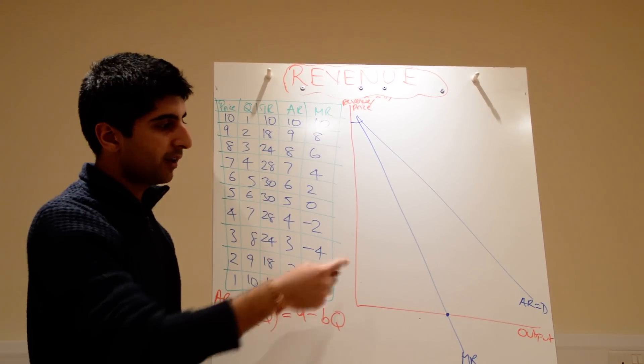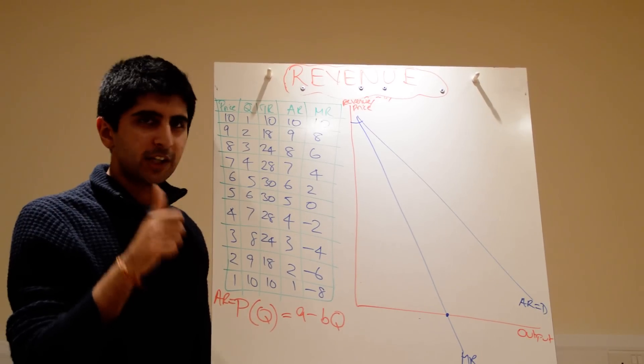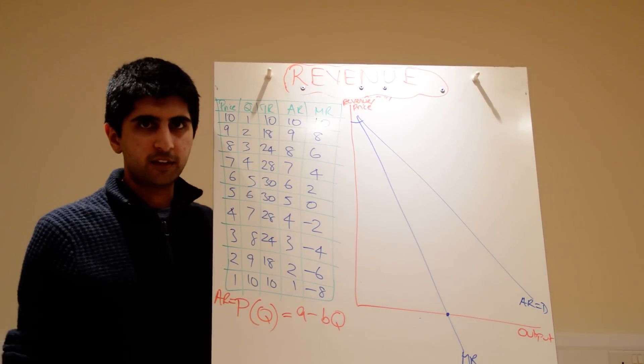So perfect competition, imperfect competition, revenue curves sorted. Make sure you understand those, they're fundamental. See you next time.